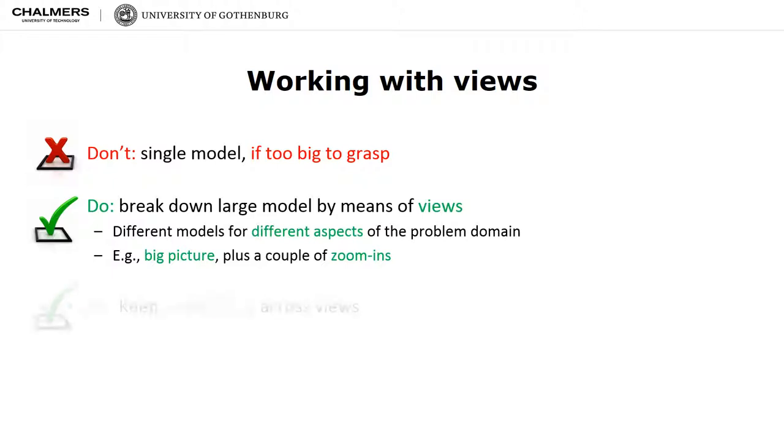It's very important to keep in mind that consistency has to be maintained across the different object models, across the different views. For instance, if you define a concept in one model and then refer to it in another model, you have to use the same terminologies and the same name.